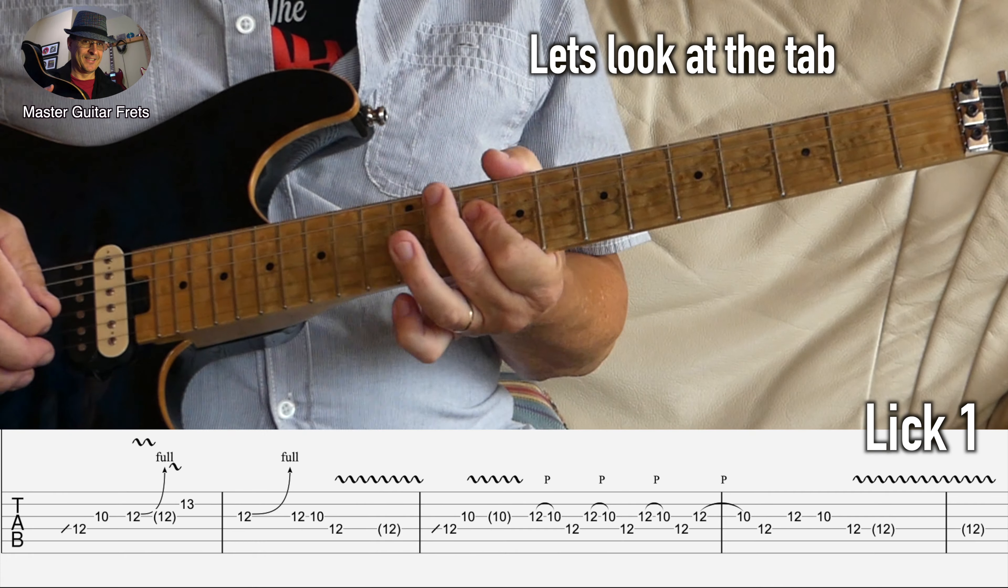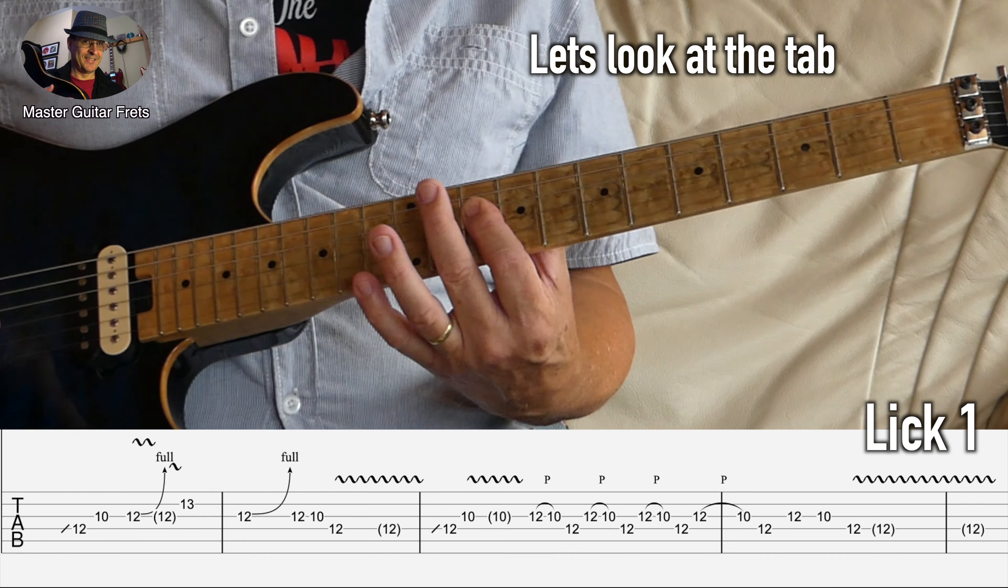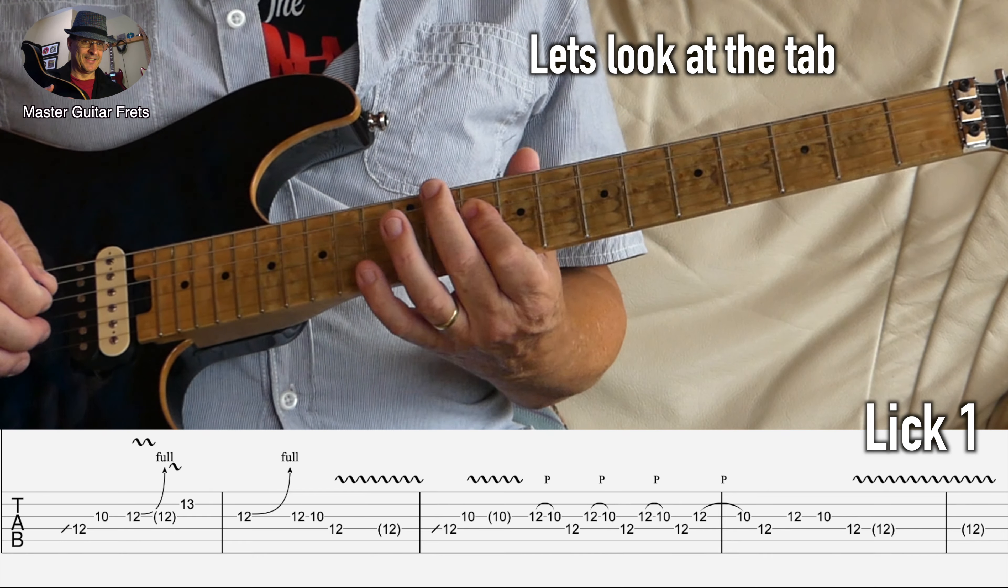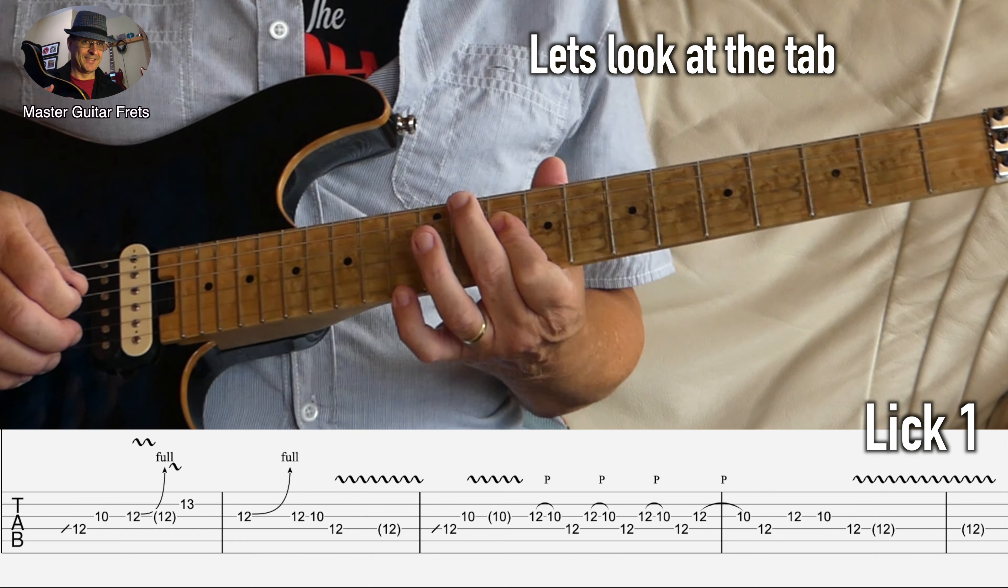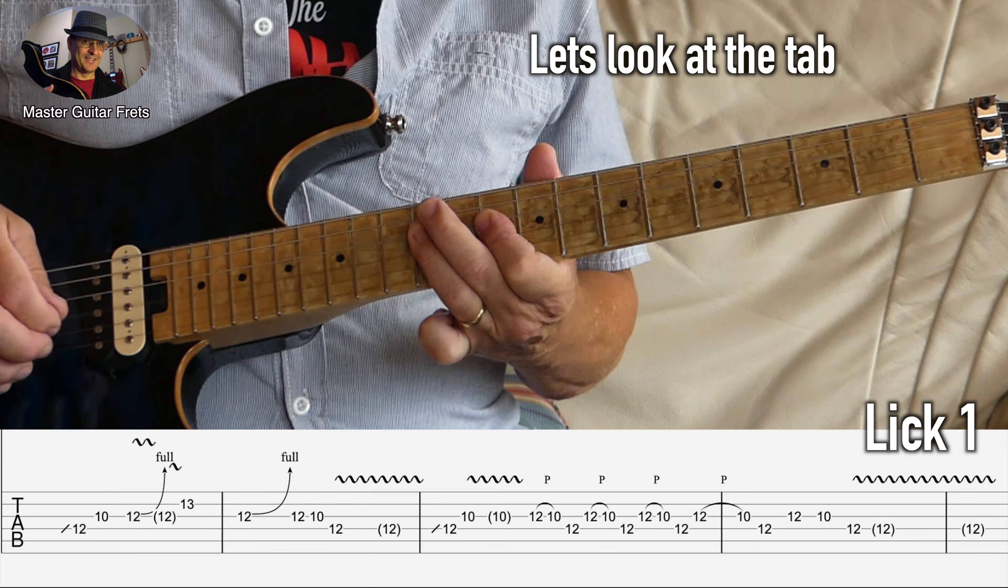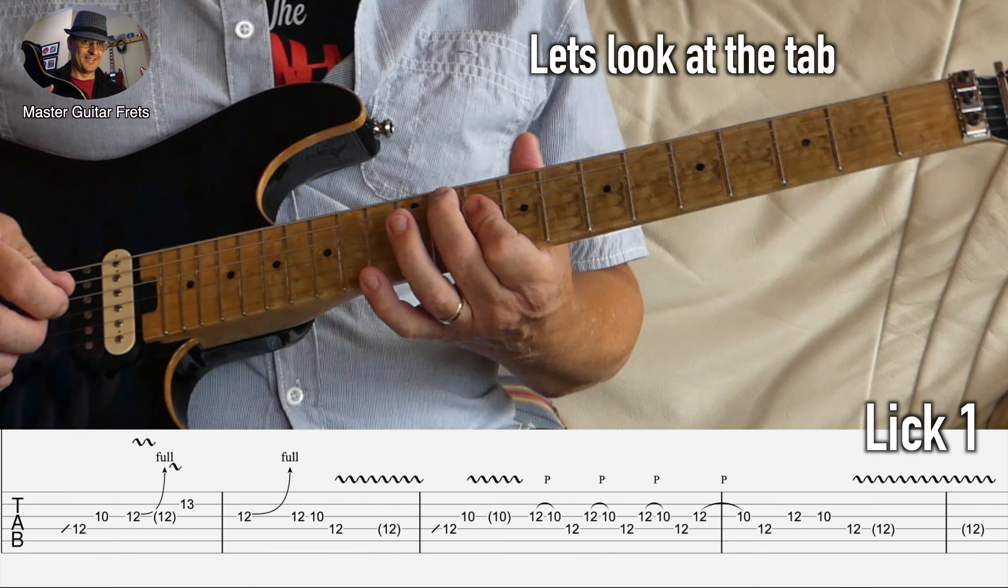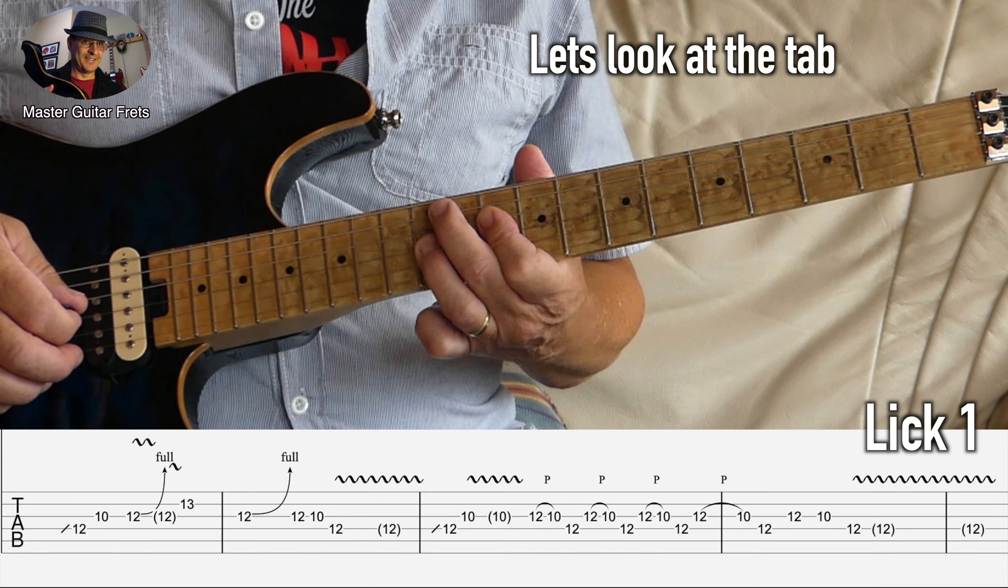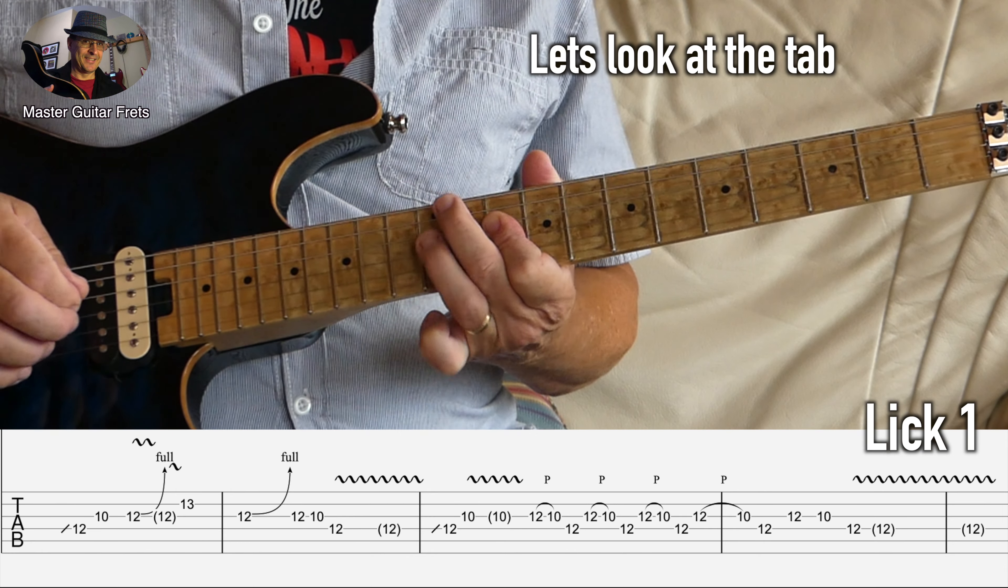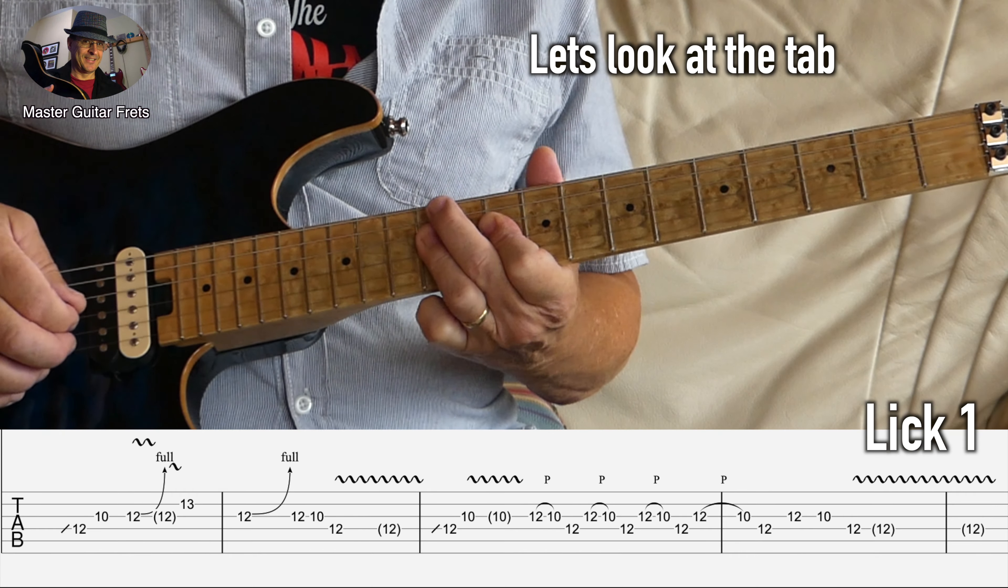The finishing lick is a series of pull-offs. So that's how we're finishing it: we're pulling off from G12 to G10 and we pick D12, and then we go right back into it.